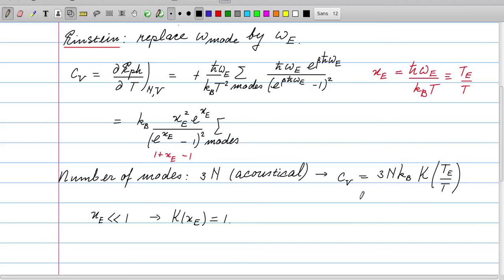That means we have the Dulong-Petit result, which we would expect for high temperatures, because high temperatures means we do not see the quantum effects anymore and we should find the classical result.